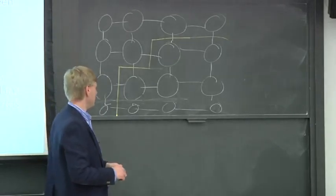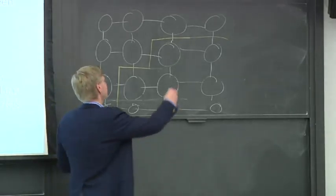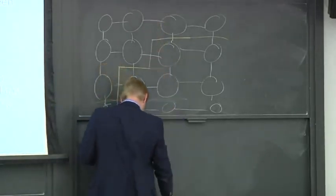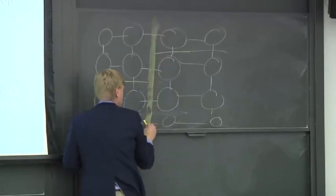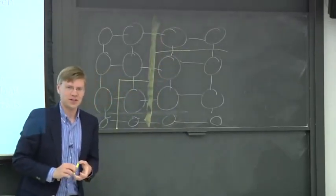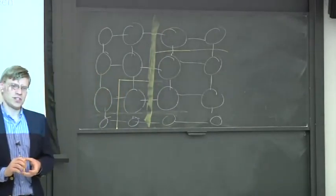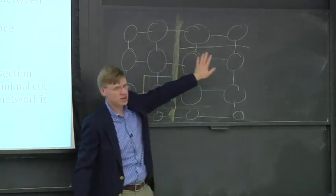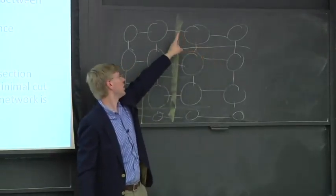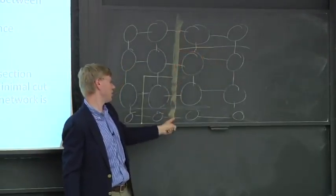Let's look at maybe a minimal one here. So minimal one might look something like this, right down the middle. So this still partitions our network into two halves. Eight nodes here, eight nodes there. Except we've now cut one, two, three, four links.